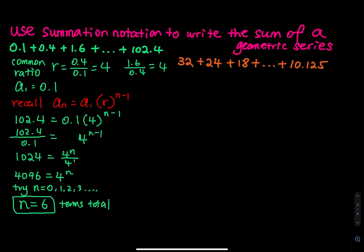So this is a summation where n goes from 1 all the way to 6 — there are 6 terms. The first term is 0.1, the common ratio is 4, and you have an n minus 1 power. That is the final answer.